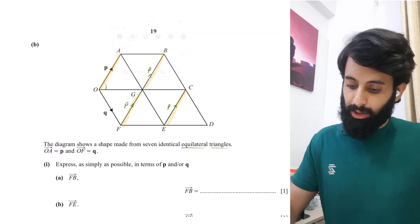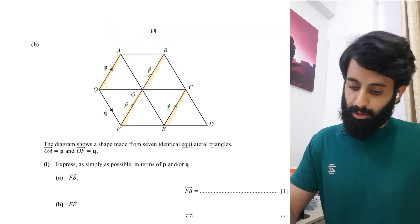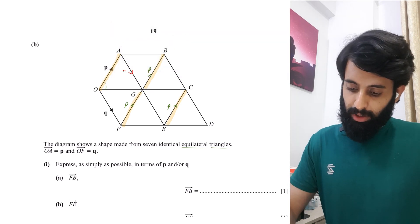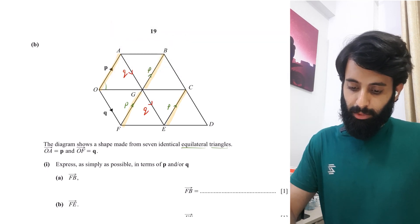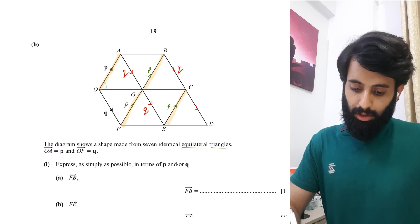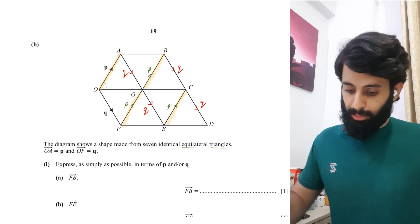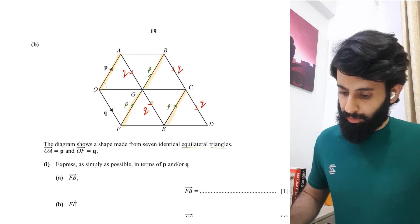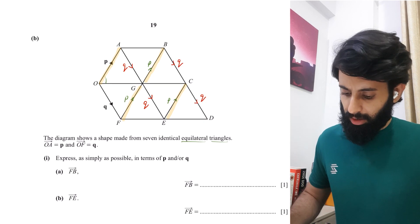Now let's look at all the Q vectors. This vector is Q, this vector is Q, this vector is Q, and this one will also be Q. Hopefully I haven't missed anything out.